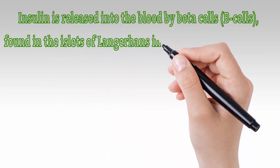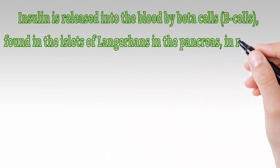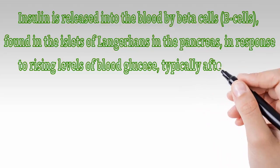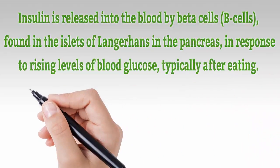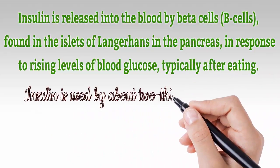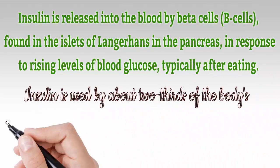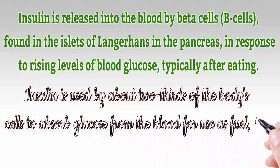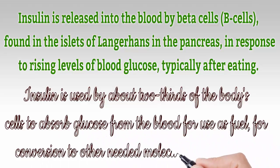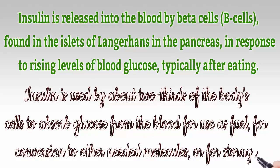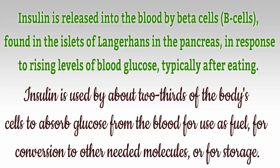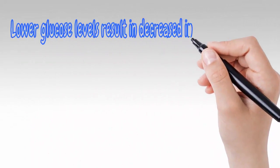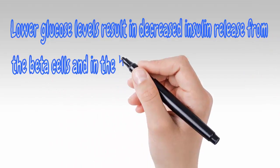Insulin is released into the blood by beta cells found in the islets of Langerhans in the pancreas, in response to rising levels of blood glucose, typically after eating. Insulin is used by about two-thirds of the body's cells to absorb glucose from the blood for use as fuel, for conversion to other needed molecules, or for storage.